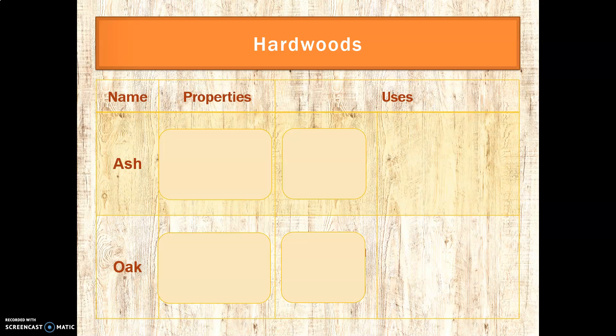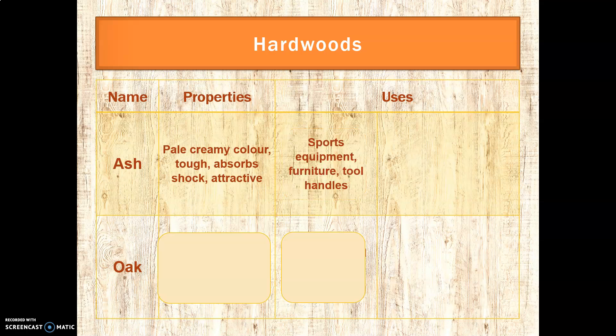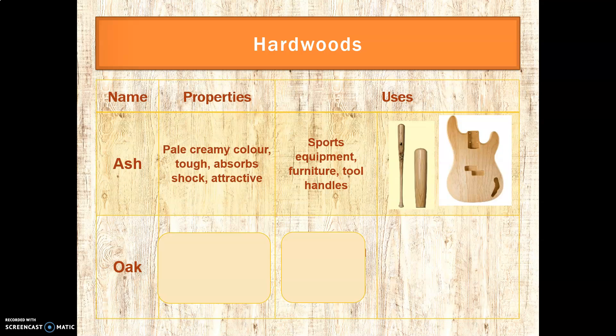The first hardwood is ash. It's pale and creamy in colour, quite tough, and absorbs shock very well. It's also very attractive because of its colour. So it's good for things like sports equipment, tool handles because it absorbs shock, and also for furniture and guitars.